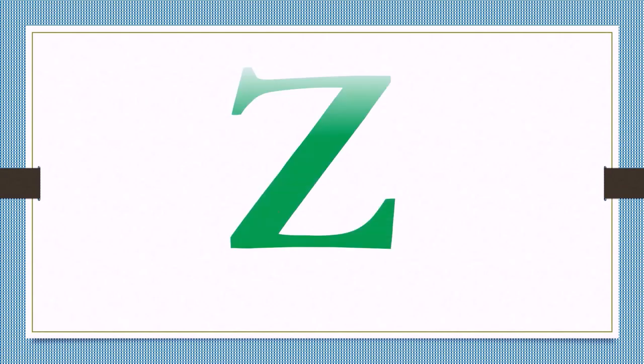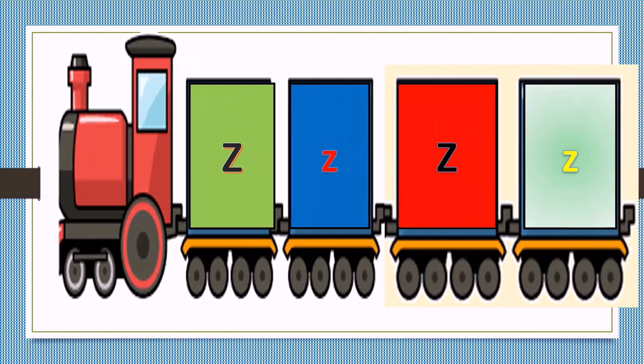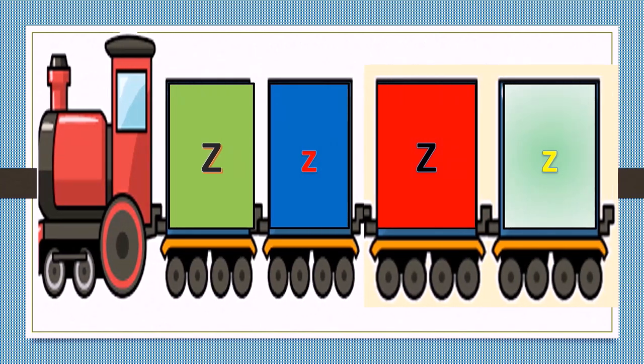This is a capital Z and this is a small Z. Now see the Z straight. Capital Z, small Z, capital Z, small Z.